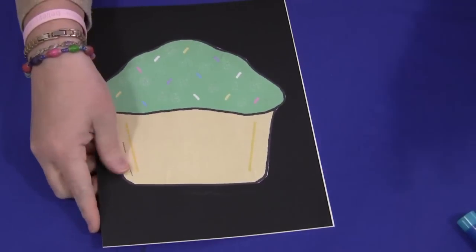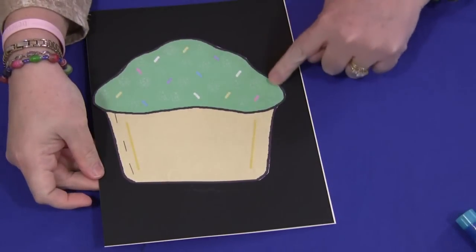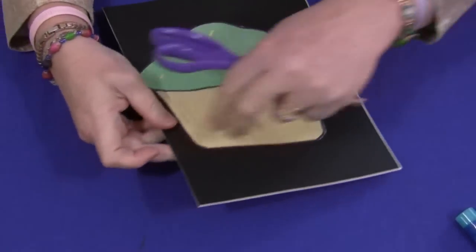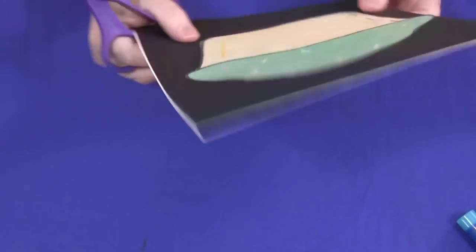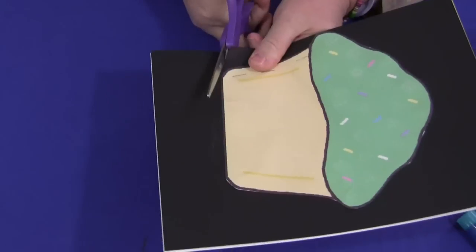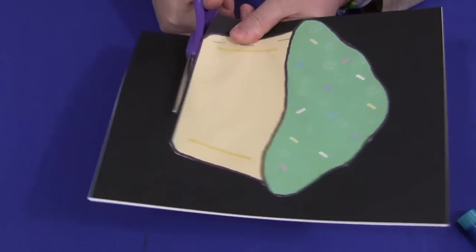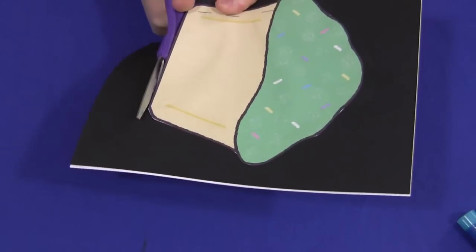And then after it's stapled, you go around and you cut around your pattern. And then all the pages inside of your book will all be cupcake shaped, or whatever type of pattern that you're using.